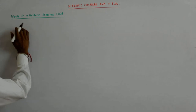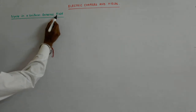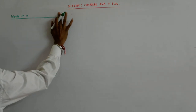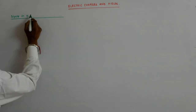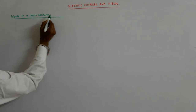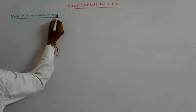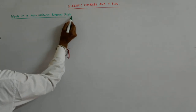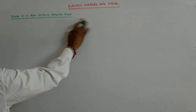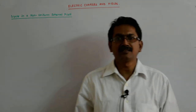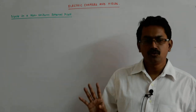What we did last was dipole in a uniform external field. Now we go to dipole in a non-uniform external field. Non-uniformity can be of many types, but what we are considering here are two types.